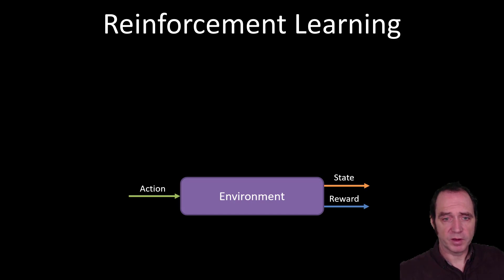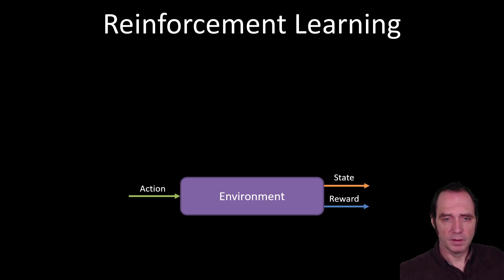An environment can also provide a reward, which is typically a positive or negative number. If the lunar lander crashes into the ground at high velocity or runs out of fuel, the reward could be a negative number. If it lands very heavily, the reward could be a small positive number, and if it lands gently in the correct position, it could be a high positive number. A reward is a way of placing a score or evaluation on how well the algorithm has reacted with the environment.